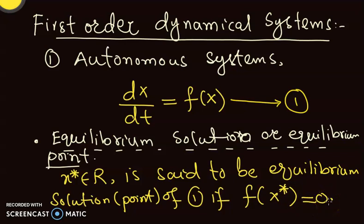So if f of x-star is 0, then we will call x-star an equilibrium point or equilibrium solution of the ODE or the dynamical system 1.